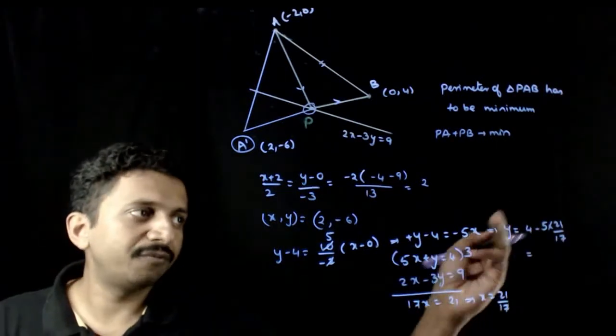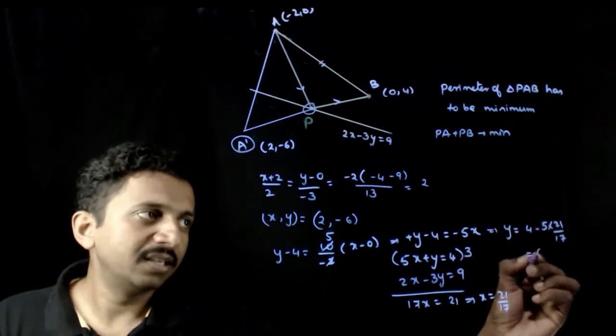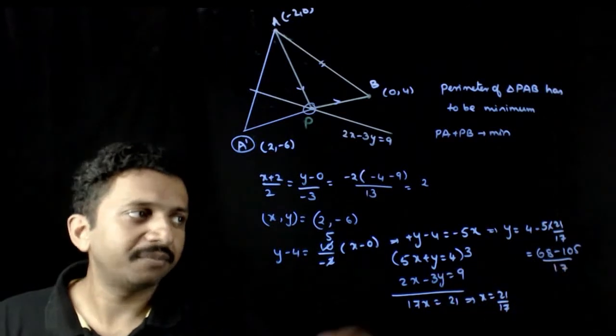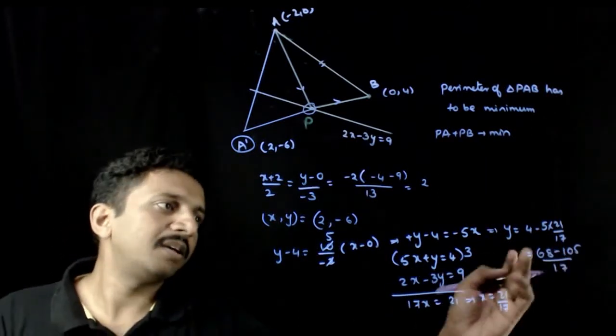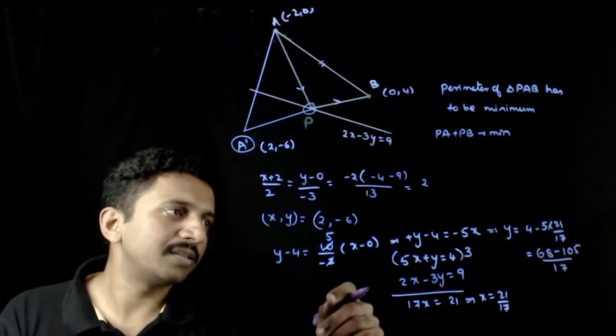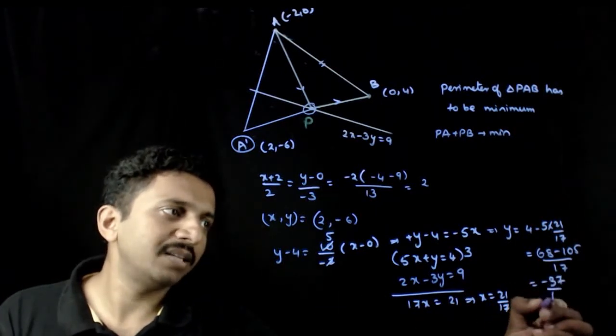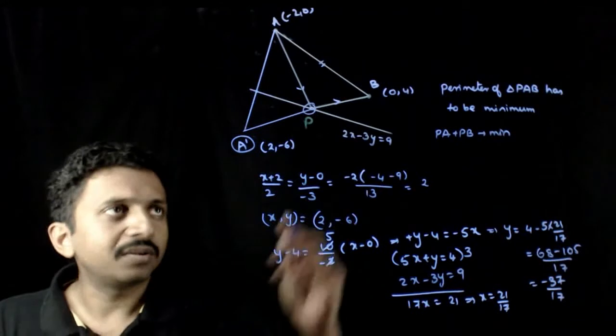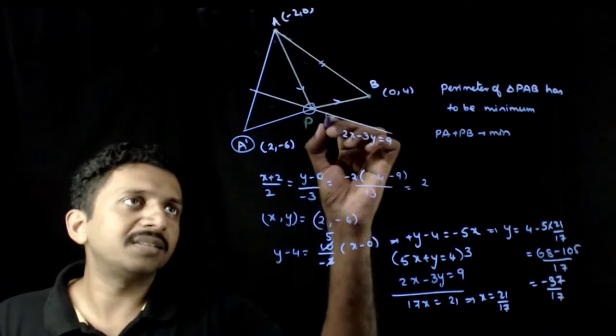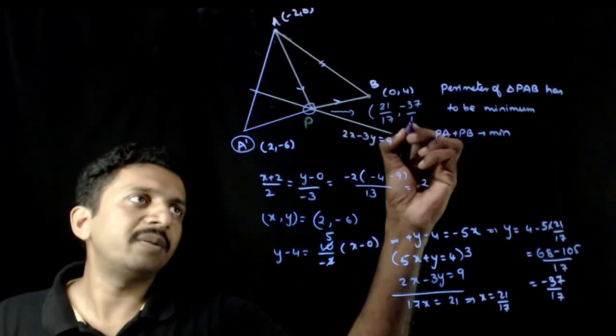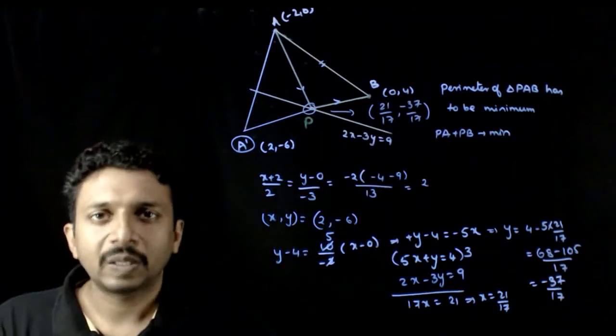That equals 17, 4s are 40 plus 28, 68 minus 105 by 17. So 100 minus 68 is 32, so that equals -37/17. Hence the required point is (21/17, -37/17). Thank you.